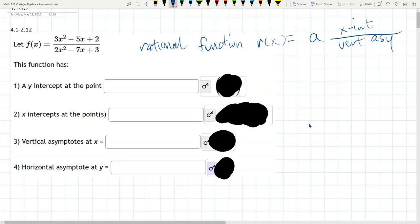This problem, we have to find a lot of properties about the rational function. One of the most important things to know about rational functions: the x-intercepts are in the numerator and the vertical asymptotes are in the denominator. So we got x-intercepts, vertical asymptotes.